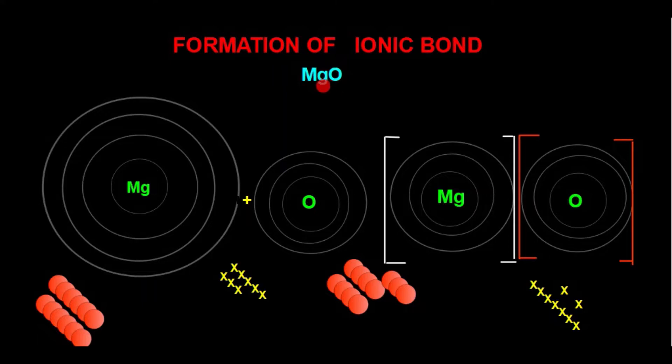In order to understand the formation of ionic bond in magnesium oxide, first we will write the electronic configuration of magnesium and oxygen, and then we will see how they are converted into positive and negative ions.